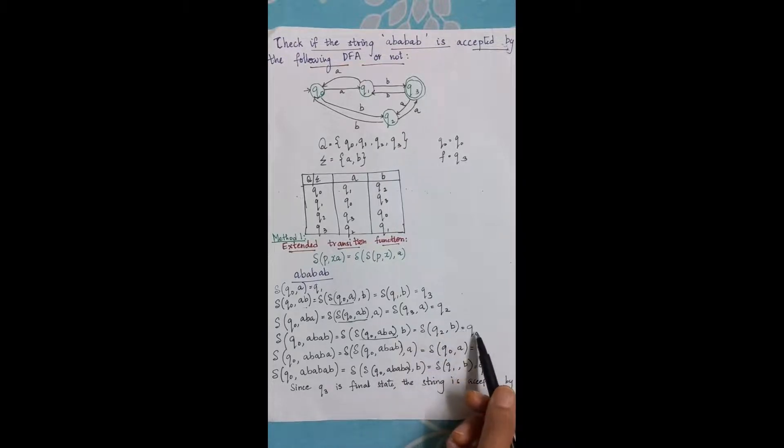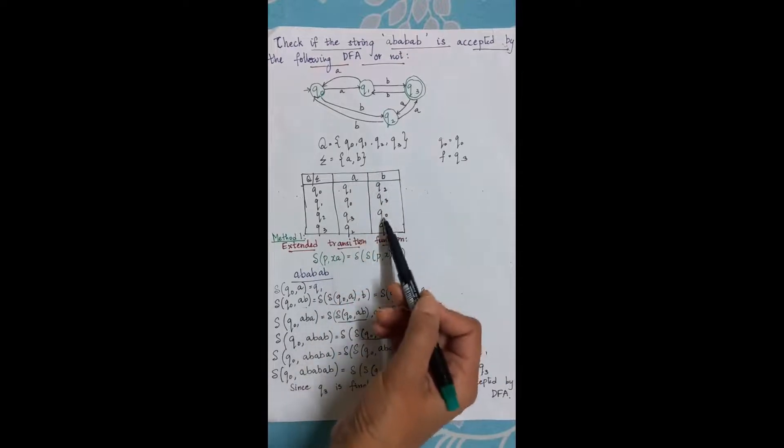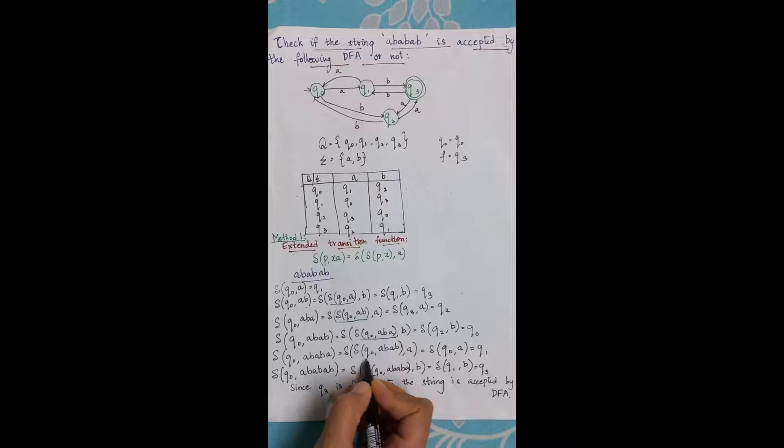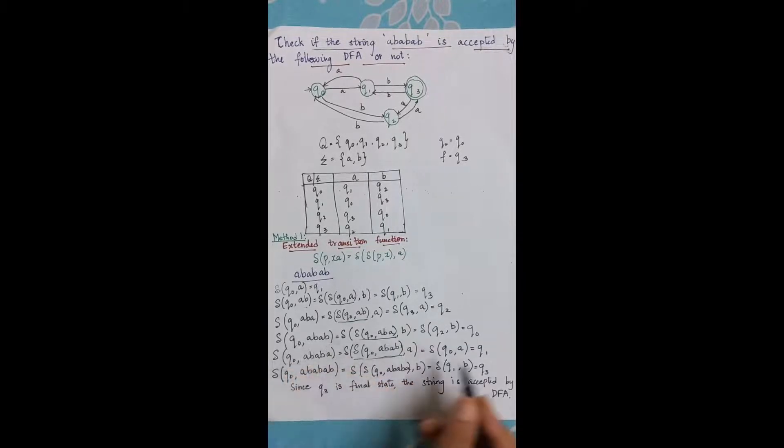Then delta, I take five characters now ababa, delta of delta of q0 comma abab comma a. Now this again is from my previous line which is nothing but q0, so I get q0 comma a and it is q1.